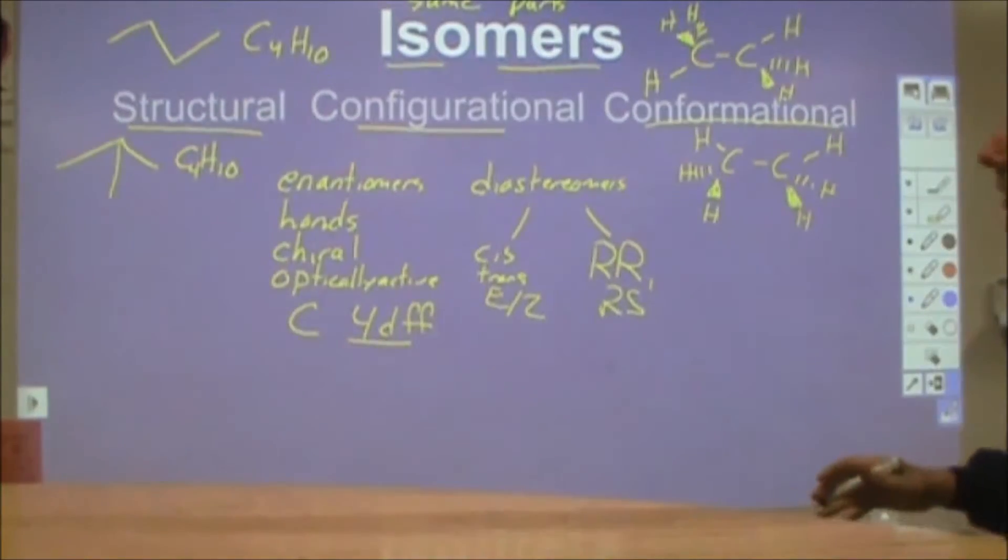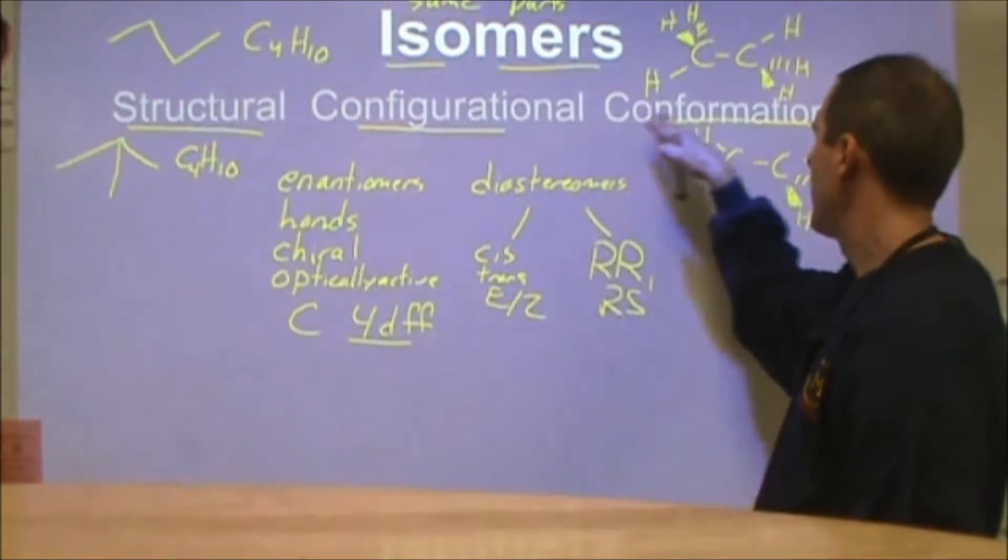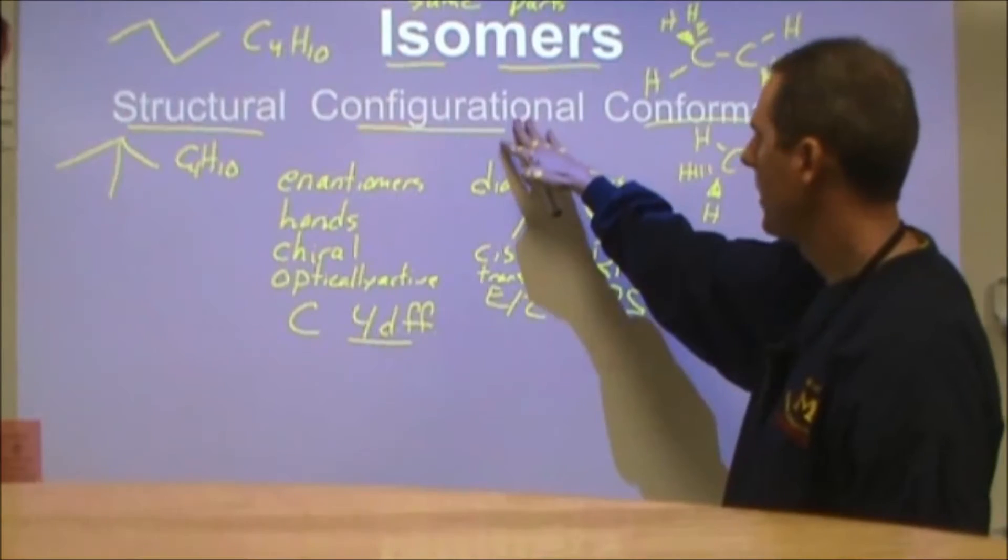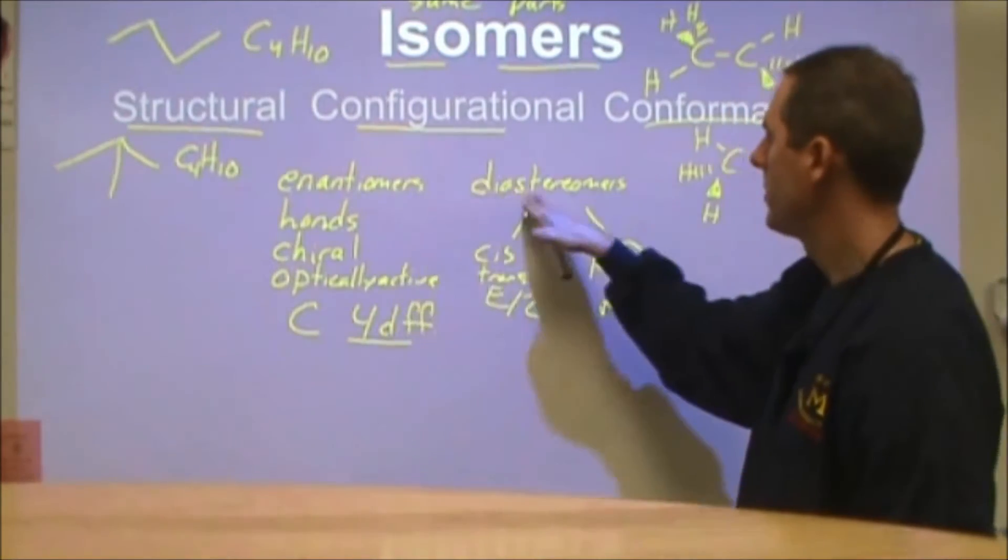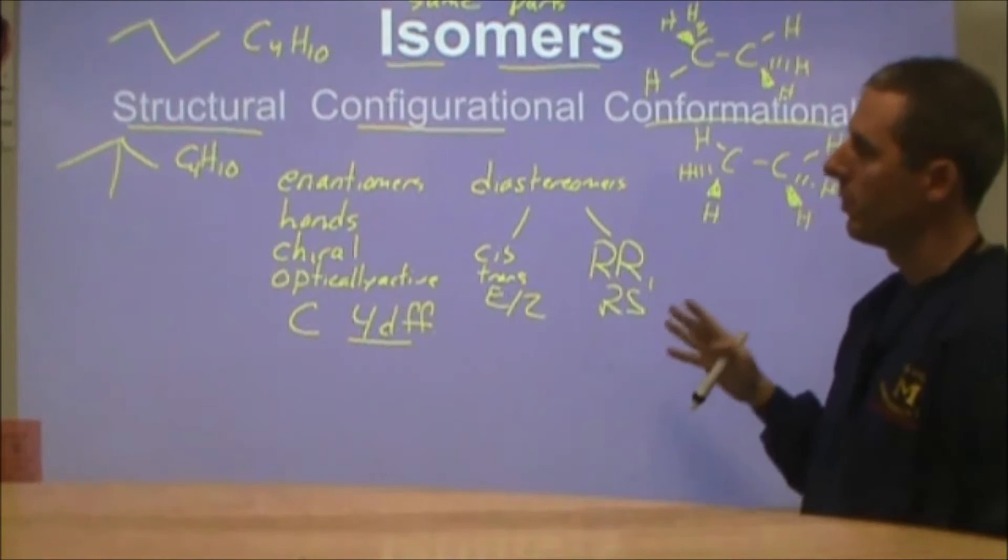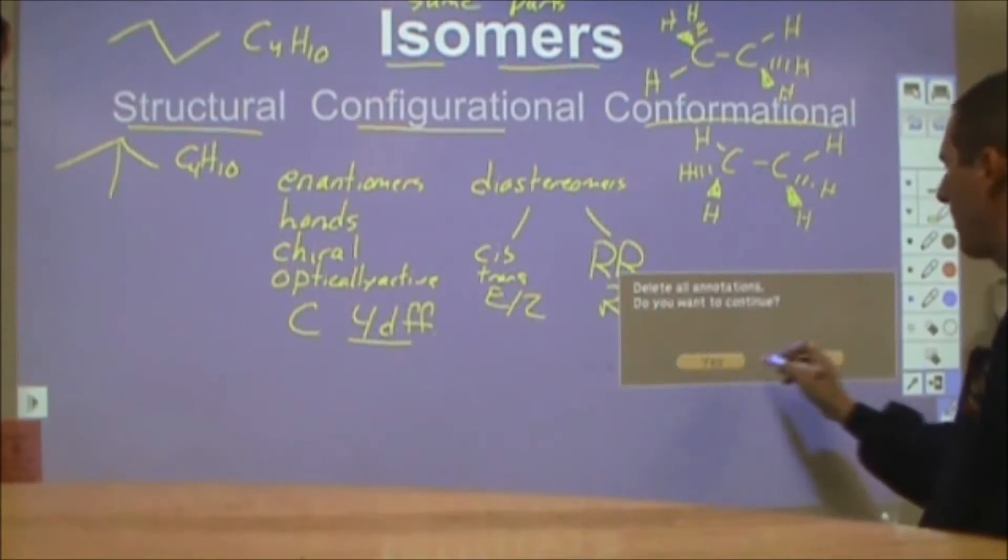So these are kind of our three kinds. We have structural, configurational, sometimes called stereoisomers, and conformational can be included into that. But I'm going to split it up into configurational which is enantiomers and diastereomers, and then conformational as its own group. So we want to go through and look at what kind of things can we use to tell the difference between these, and what things should we know about their properties.